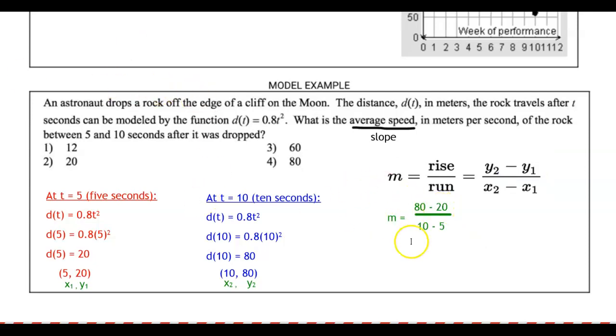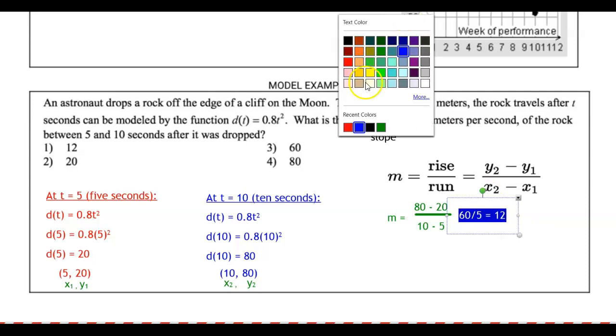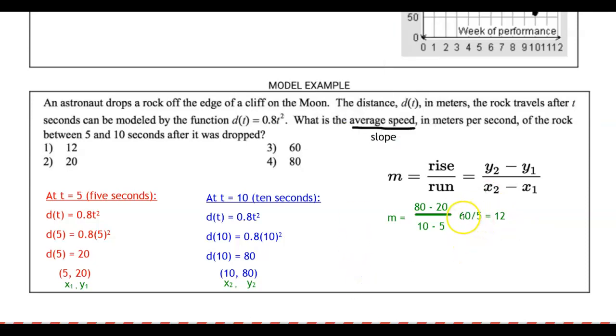That should be 80 divided by 20 over 10, 80 minus 20 rather, divided by 10 minus 5. And that should simplify out to 60 over 5. And we know that 60 divided by 5 is the same as 12. So the solution here is that the slope is 12. Remember, we're talking about units as well. It told us the units here in meters per second. So let's write out our sentence. So here we included the interval from 5 to 10 seconds. The rock's average speed was 12 meters per second. It's 12 y's per x. And the correct answer here then must be 12.